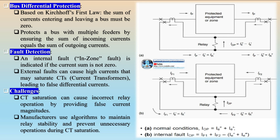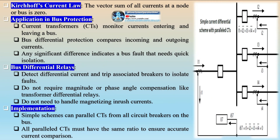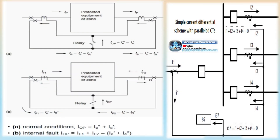There are primarily two types of differential protection relays used for busbar protection. First, low impedance differential protection — this is the most commonly used method. It is sensitive and can adapt to complex schemes, allowing for operation even during substation reconstruction. Secondly, high impedance differential protection. Some system operators still use this method; it is typically less sensitive than the low impedance method but has advantages in terms of simplicity and cost effectiveness.